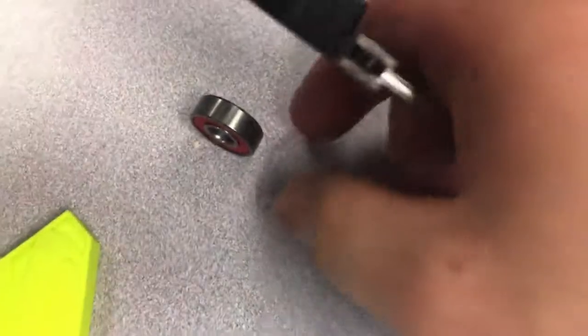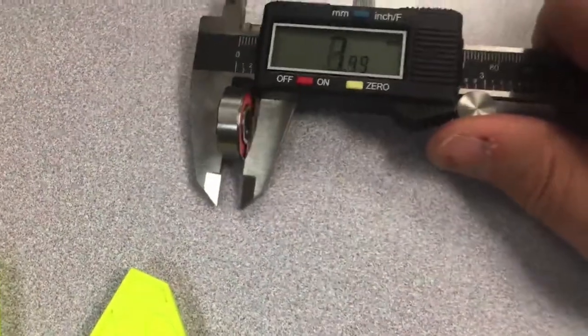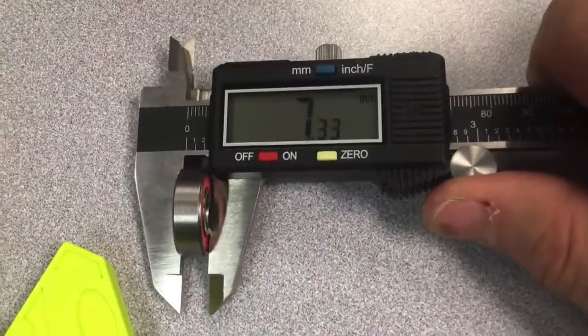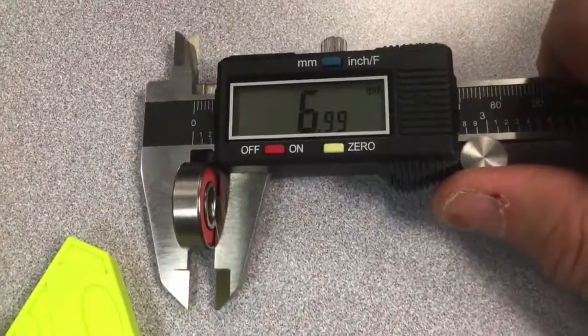Also, we're going to do the thickness of the bearing. Just like this. And it shows it's at six point nine nine. We'll round that up to seven since it's so close. So we'll go seven millimeters for the thickness.